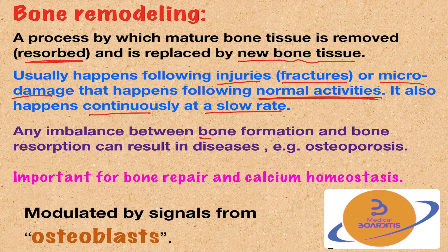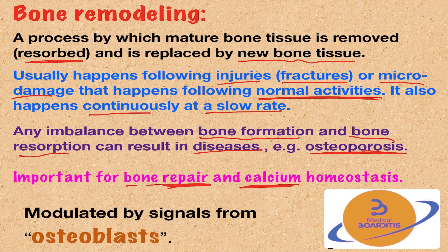Any imbalance between bone formation and bone resorption will result in diseases. For example, in osteoporosis there is excessive bone resorption and not enough bone formation, which results in bone weakening. Bone remodeling is also important for calcium homeostasis, making sure serum calcium stays within normal limits.